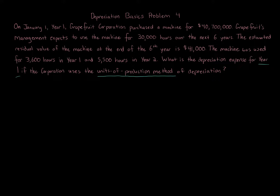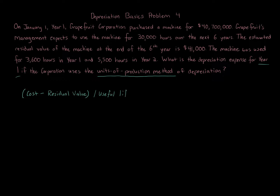We have the purchase amount, what the company expects to use the machine for over its life of six years, the residual value, and hours used in Years One and Two. The formula for Step One is: cost minus residual value, divided by the useful life in units. Units can vary depending on the asset.